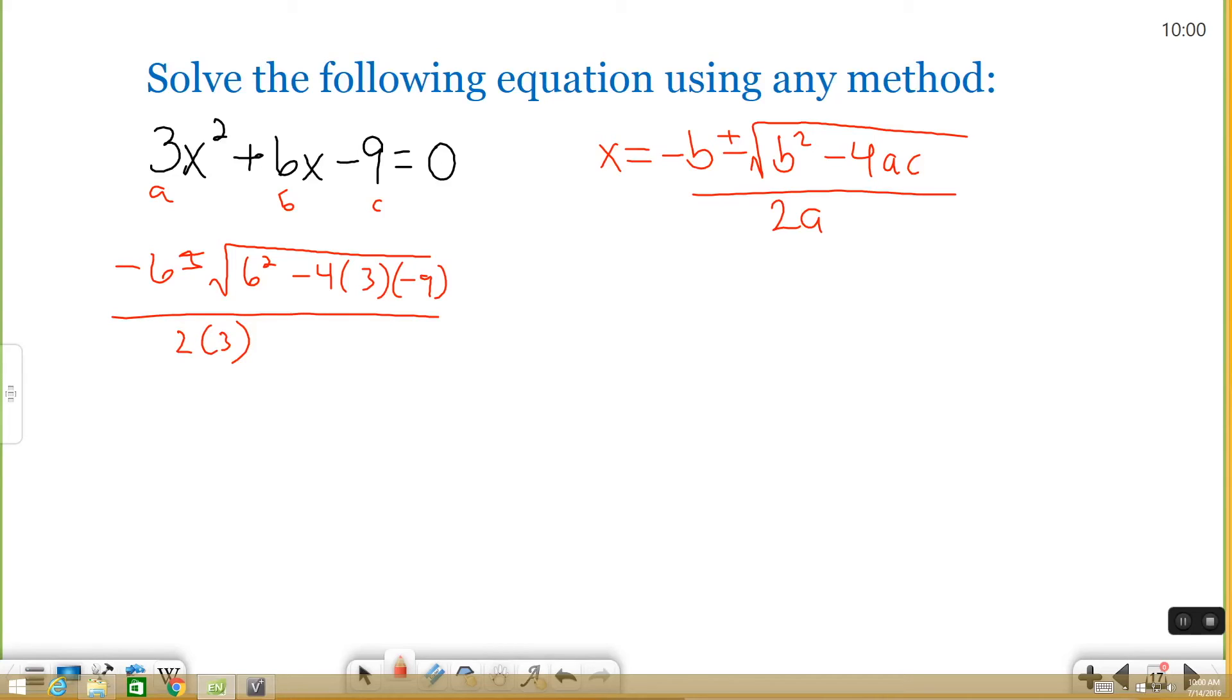All right, so this is going to take a few steps, but let's start simplifying the information. We still have negative 6 plus or minus square root. 6 squared is 36 minus 4 times 3 is 12. 12 times negative 9 is negative 108. All over 2 times 3 is 6.